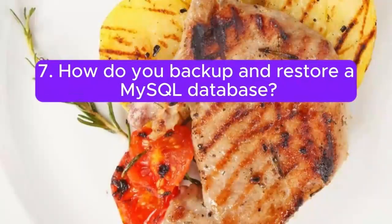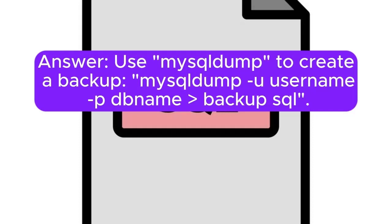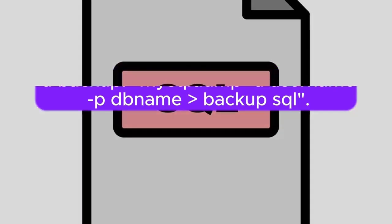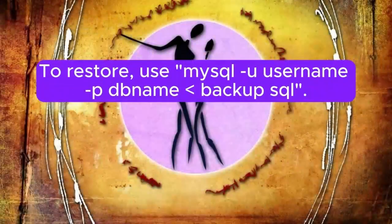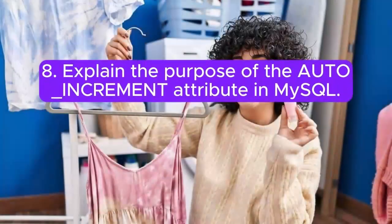Question 7: How do you backup and restore a MySQL database? Answer: Use mysqldump to create a backup: mysqldump -u username -p database_name > backup.sql. To restore, use: mysql -u username -p database_name < backup.sql.